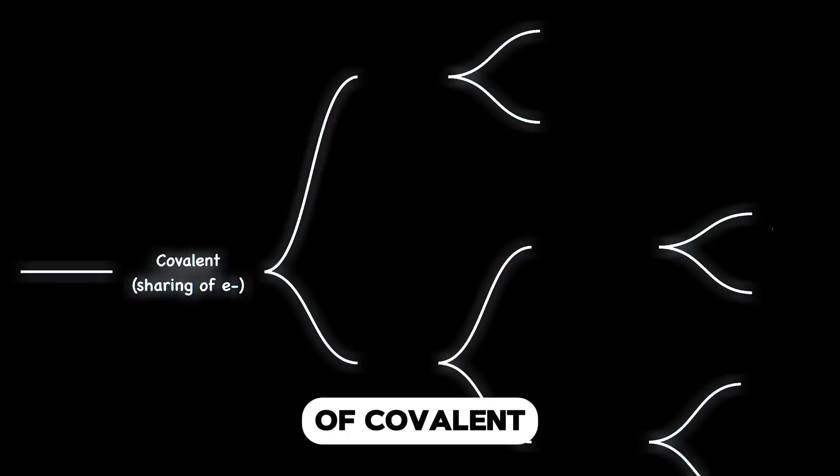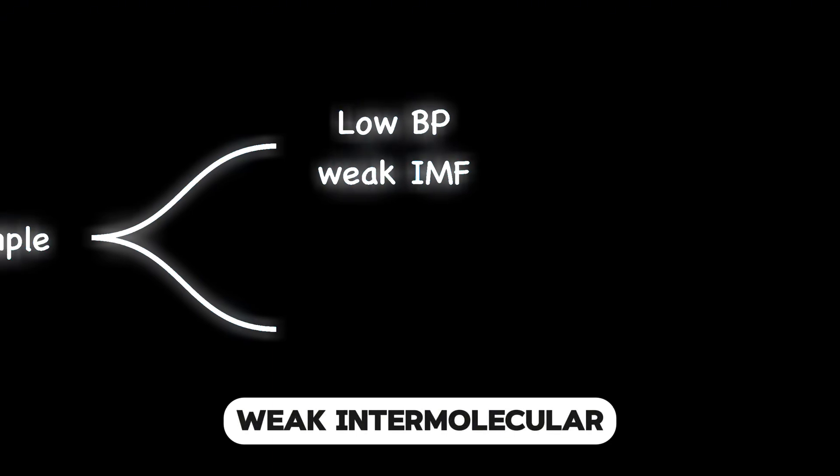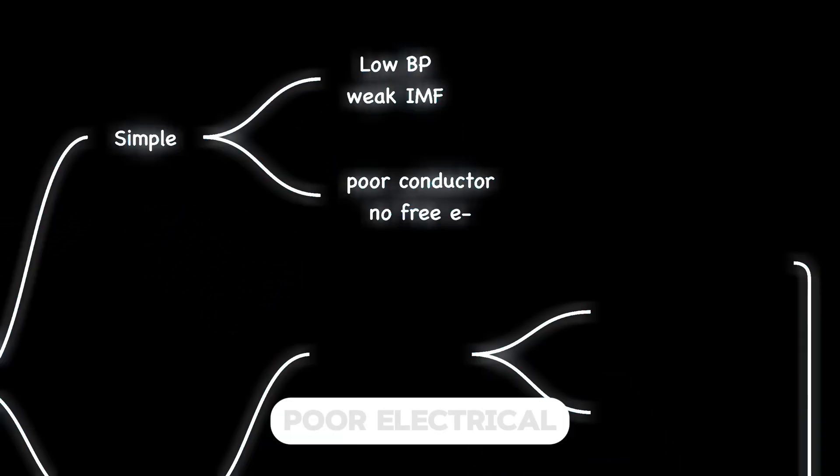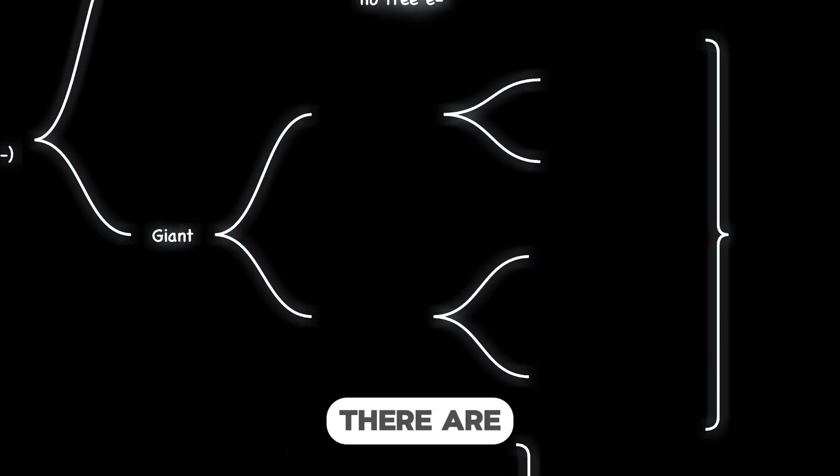There are two types of covalent molecules, simple and giant. Simple covalent molecules tend to have low boiling points due to weak intermolecular forces of attraction. They are poor electrical conductors due to the lack of mobile electrons. There are two main forms of giant covalent molecules.